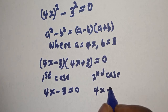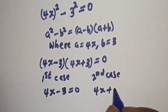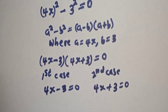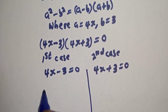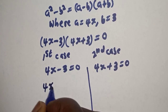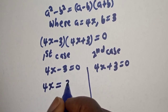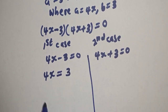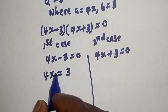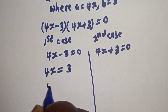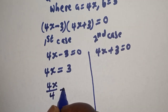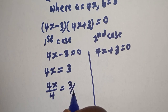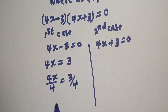4s + 3 = 0. Let's consider the first case: 4s = 3. Divide both sides by 4. 4s divided by 4 equals 3 divided by 4. We cancel the 4s.